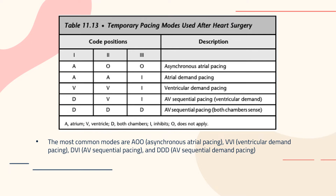For temporary pacing modes used after heart surgery, you'll typically hear of the first three code positions. AOO is asynchronous atrial pacing, AAI is atrial demand pacing, VVI is ventricular demand pacing, DVI is AV sequential pacing with ventricular demand, and DDD is AV sequential pacing with both chambers sensing. The most common modes are AOO, VVI, DVI, and DDD.